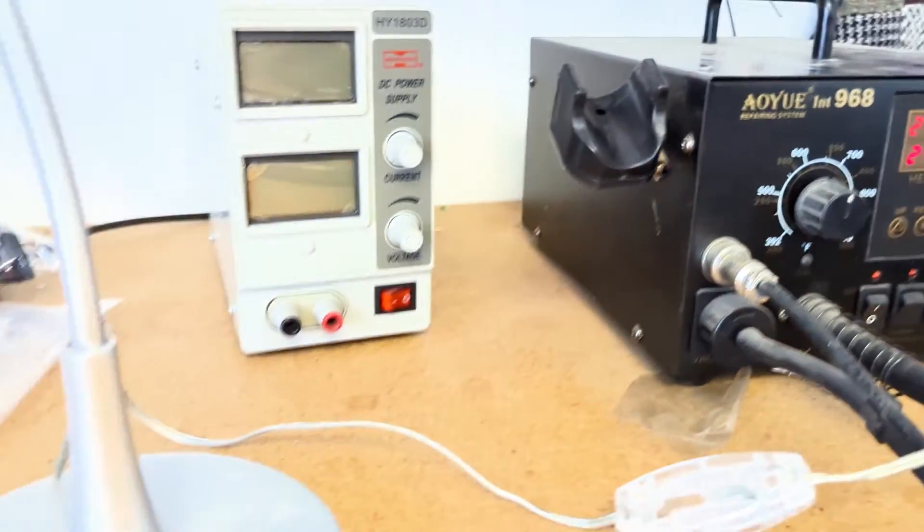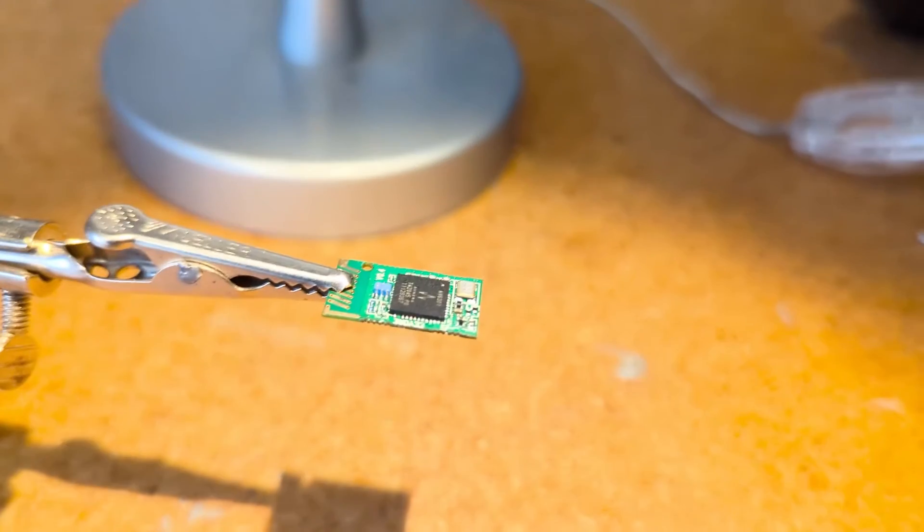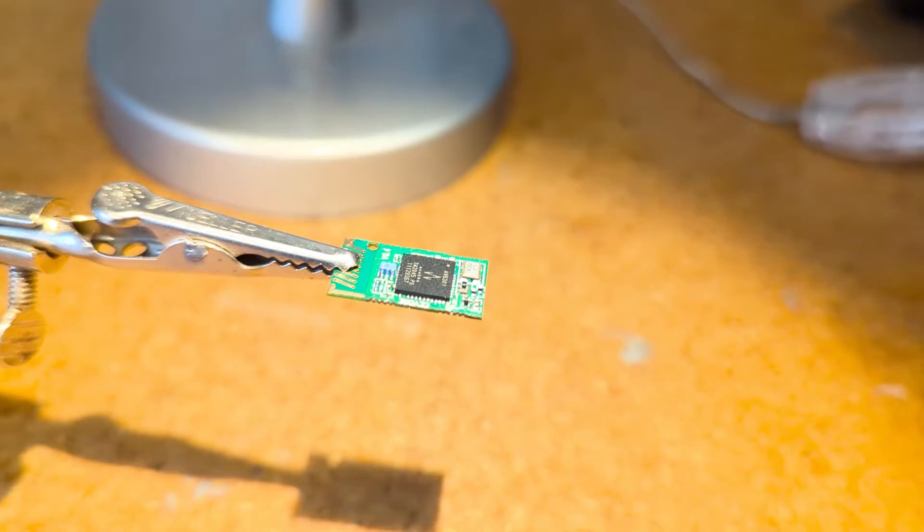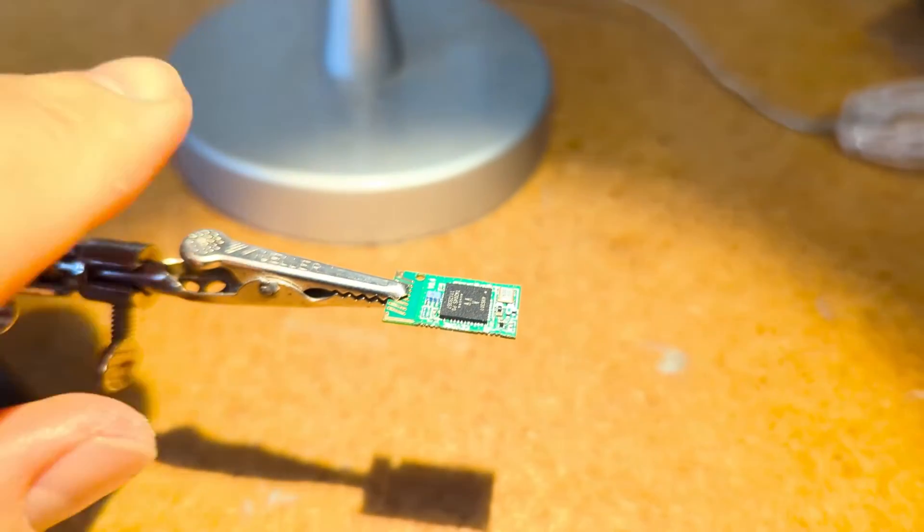Just make sure it's low airflow so that if you do actually unseat something and get it loose enough, it doesn't blow away. And again, you can do this with an oven or a toaster oven at home too. Same procedure.